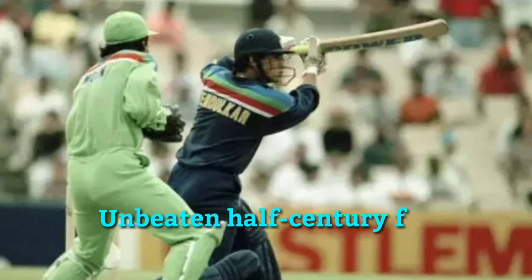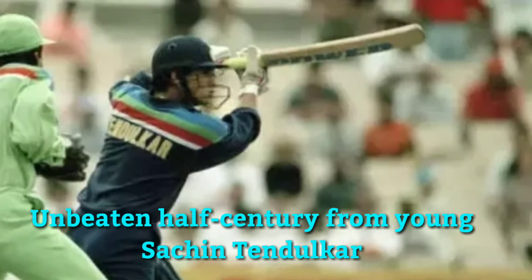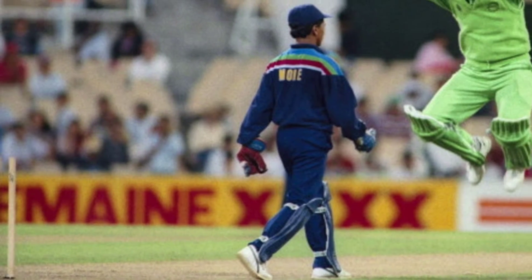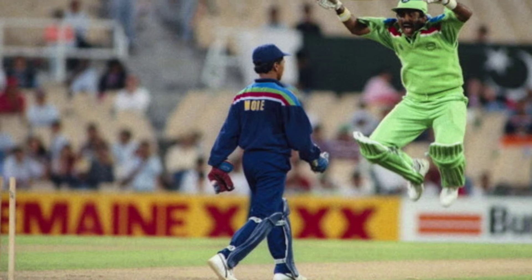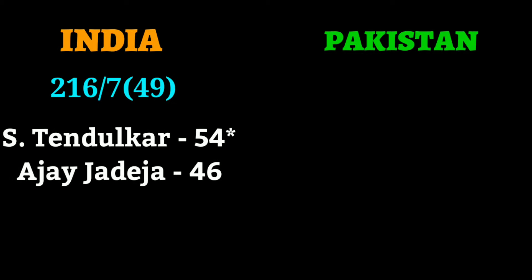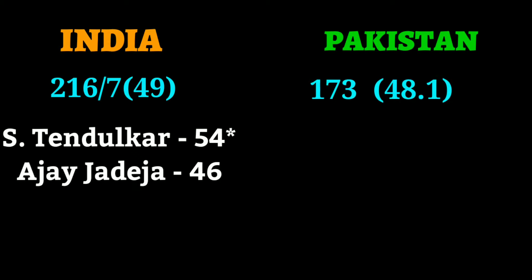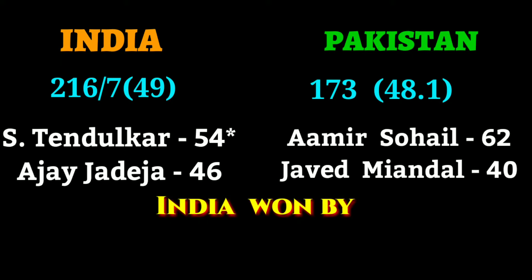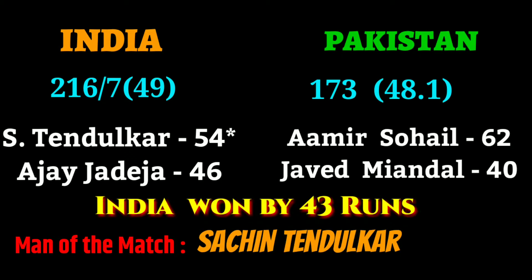Young Sachin Tendulkar scored an unbeaten half-century in the first innings. India scored 216 for 7 in 49 overs while Pakistan were all out for 173 in 48.1 overs. India won by 43 runs, with the man of the match being awarded to Sachin Tendulkar.